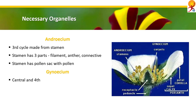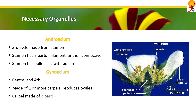Gynoecium: this is the central part or fourth whorl of the flower and it is the female sex organ. Each and every gynoecium is made of one or more carpels and produces female ovules. The carpel is made of three components: ovary, style, and stigma.